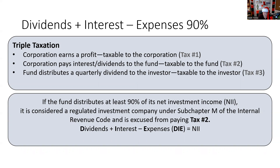So if the fund distributes at least 90% of its net investment income, it's considered a regulated investment company under Subchapter M, and you're excused from paying tax because of the flow-through. So the DIE 90, again, is the dividends plus the interest, less the expenses — that equals net investment income.